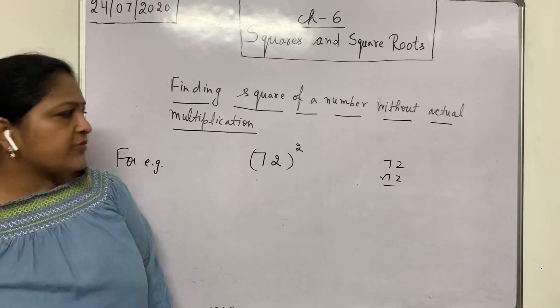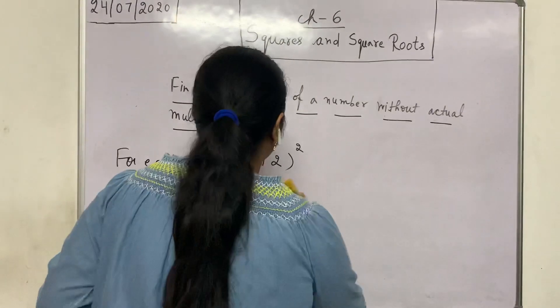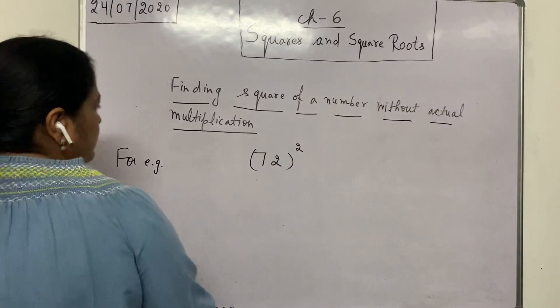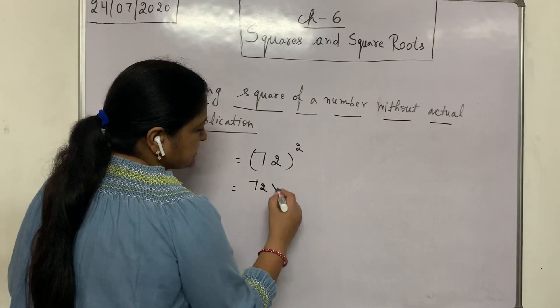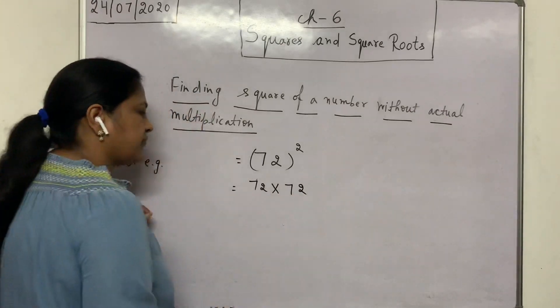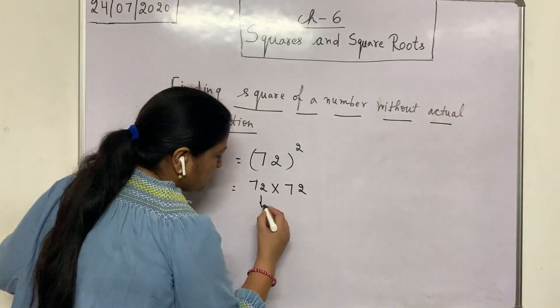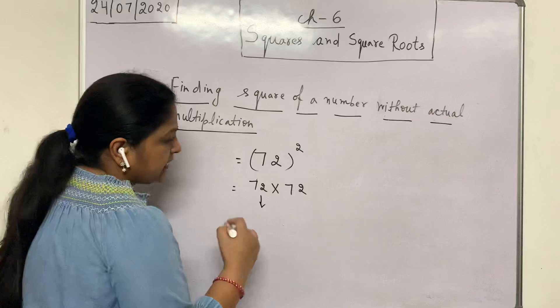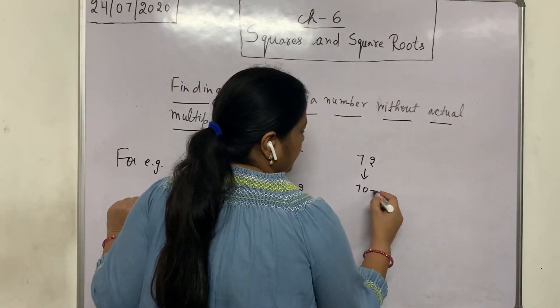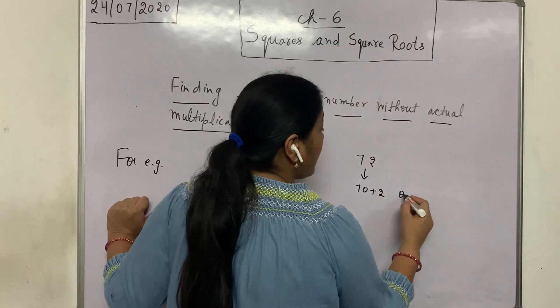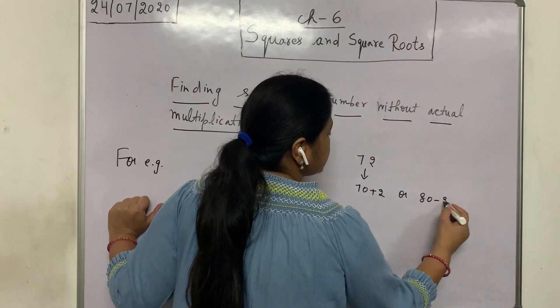Yes, using distributive property, we can find its square. First write 72 square as 72 into 72. Let's split this 72 as the tens and ones. How? Like 72, I can write as 70 plus 2 or 80 minus 8.